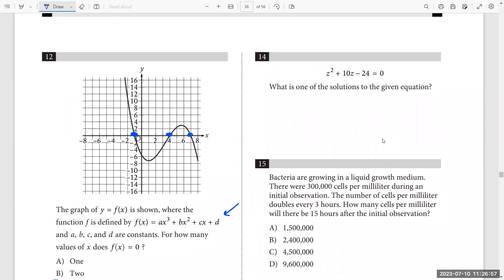z squared plus 10z minus 24 is equal to 0. What is one of the solutions of the given equation? Just factor, solve it by factorization. z squared is z times z. The 24, I can factor it as 2 times 12 because the difference is 10. So make it plus 12 and minus 2. So by solving this one, you have z is equal to 2. This is a solution. The other solution, z equals negative 12 by making each factor equal to 0.